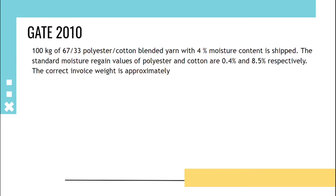100 kg of a 67/33 polyester-cotton blended yarn with 4% moisture content is shipped. The standard moisture regain values of polyester and cotton are 0.4% and 8.5% respectively, and the correct invoice weight is asked. To find this, we first calculate the resultant regain: (0.67 × 0.4) + (0.33 × 8.5), which gives a resultant regain of 3.073%.